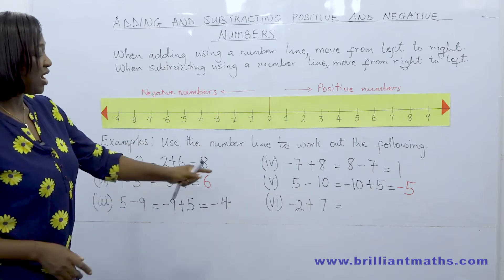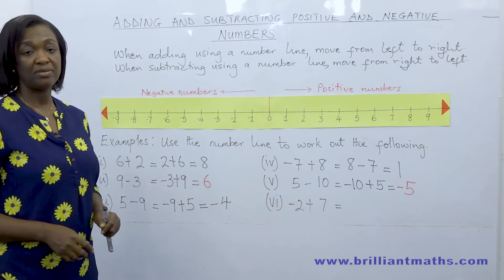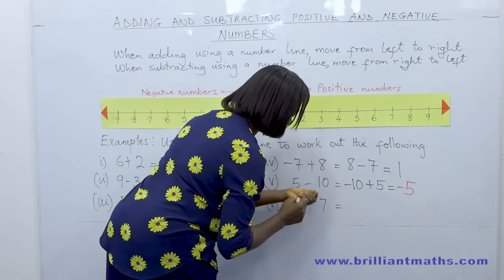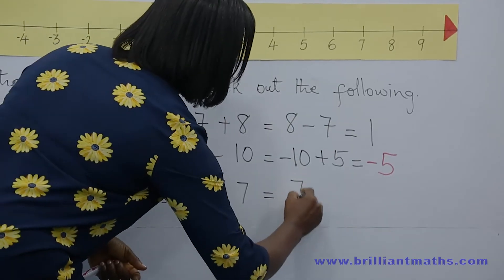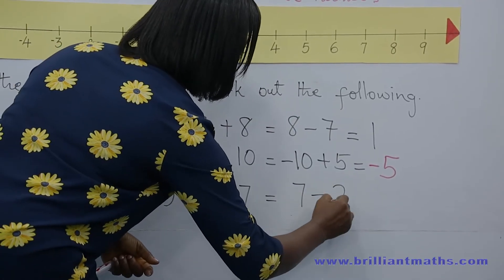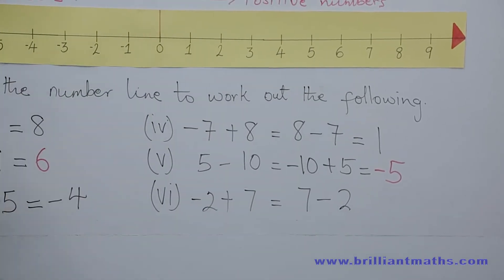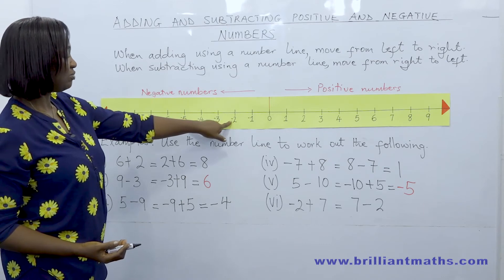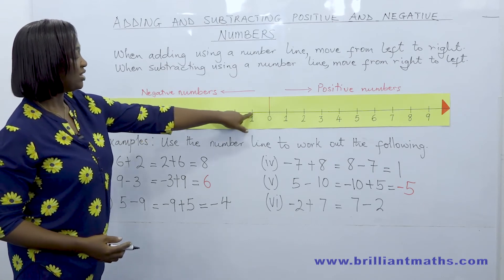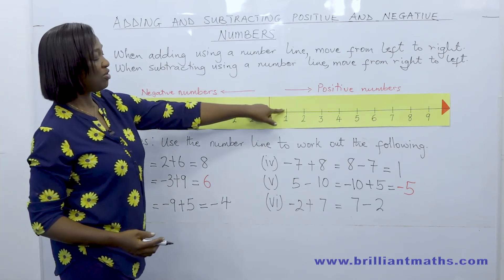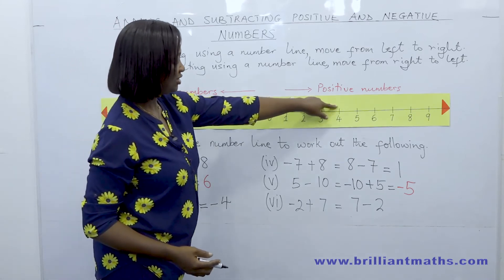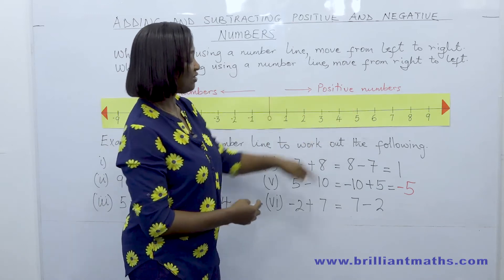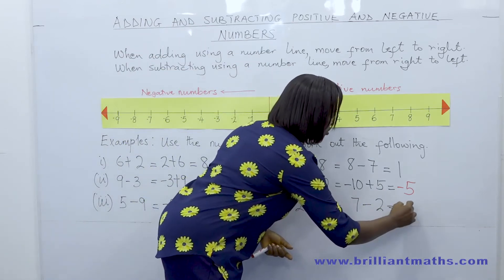Finally, minus two plus seven is the same as seven minus two, and we all know seven minus two is five. Starting at minus two and adding seven: one, two, three, four, five, six, seven. Minus two plus seven is equal to five.